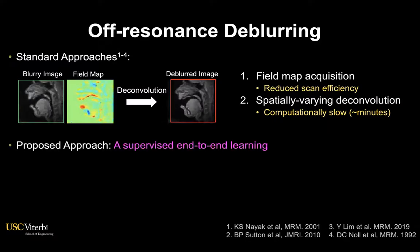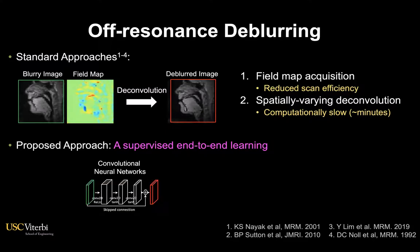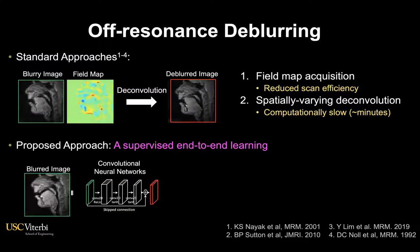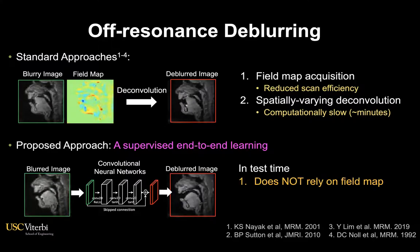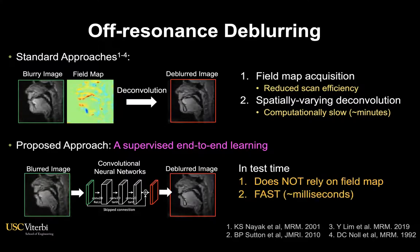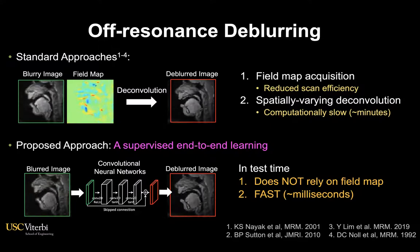Therefore, in this work, we propose a supervised learning method that utilizes a compact three-layered CNN architecture. Once trained, it does not require explicit knowledge of the field map and can perform deblurring within a few milliseconds.